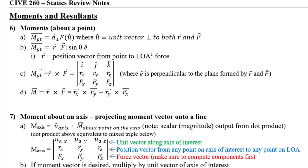Moving into chapter four — the last full chapter on exam one — we start talking about moments. Moments are more challenging than forces. Learn the right-hand rule, learn how to do cross products, and understand what a moment is: it's the rotational tendency of a force — a twist, not a push. We had three ways to compute moments. One was using perpendicular distance, which works great in 2D but becomes complex in 3D since you need the unit vector perpendicular to both r and F.